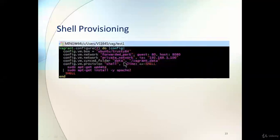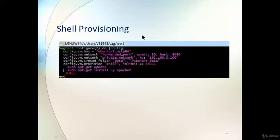To run commands inside the virtual machine after creation, use `config.vm.provision "shell", inline:` followed by a heredoc starting with `<<-SHELL`. Write your commands inside — for example, updating the OS and installing Apache. You can write as many commands as needed, then close with `SHELL` and `end`. Since we opened with `do`, we close with `end` — one `end` for each `do` block.